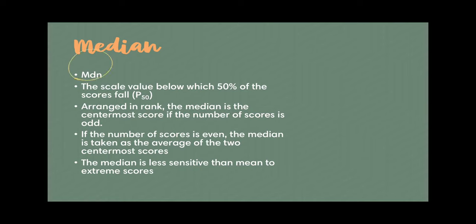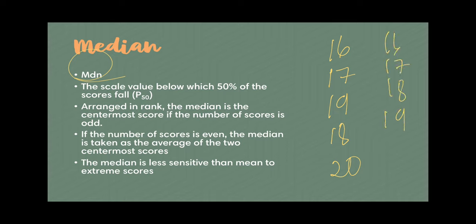Next we have the median. The median is the score or scale value below which fifty percent of the scores fall, also called the P50 or percentile 50. Arranged by rank, the median is the centermost score if the number of scores is odd. For example, you have sixteen, seventeen, nineteen, eighteen, twenty. Arrange them: sixteen, seventeen, eighteen, nineteen, twenty. Your median is eighteen — half of the scores is above eighteen and half is below eighteen.